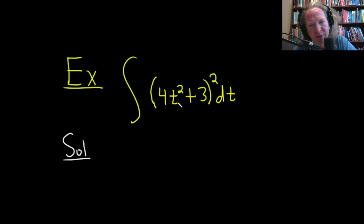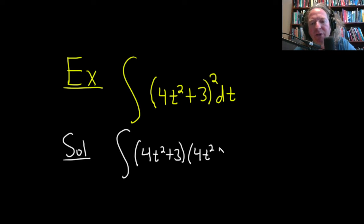So to do this, I think one way to do it is to simply expand it out. And because there's a 2 here, you can write it twice and just multiply it out, or you can take a shortcut. Let's go ahead and, how should we do it? Oh, let's just write it twice. So this is going to be 4t squared plus 3 times 4t squared plus 3.